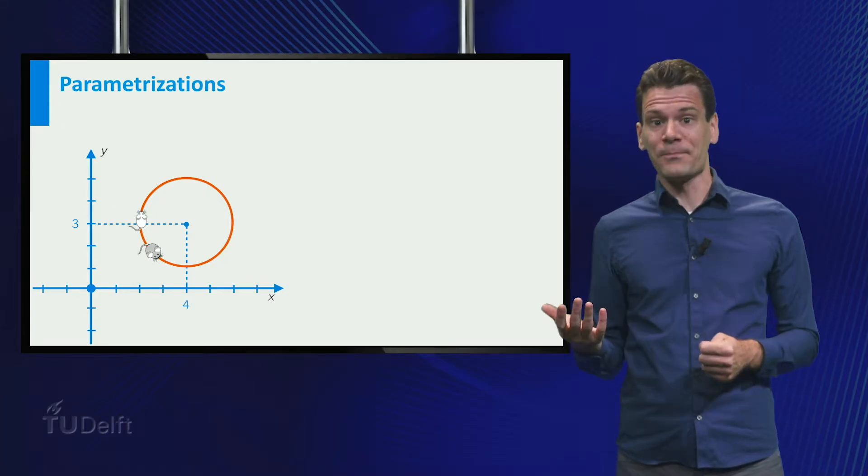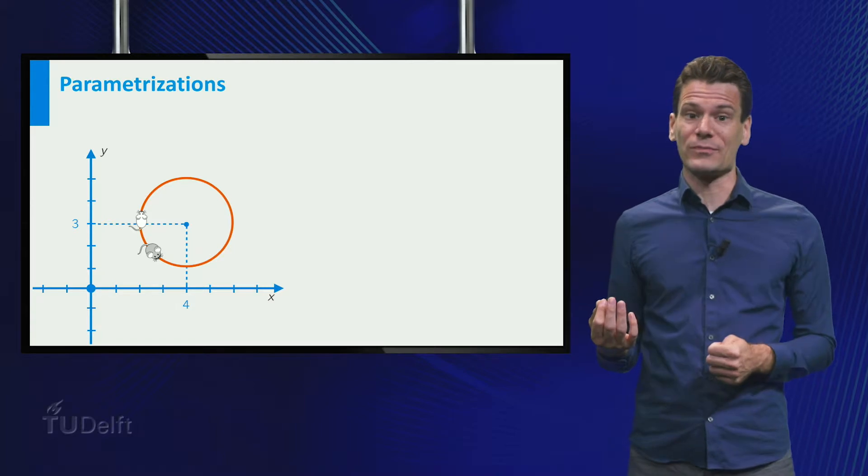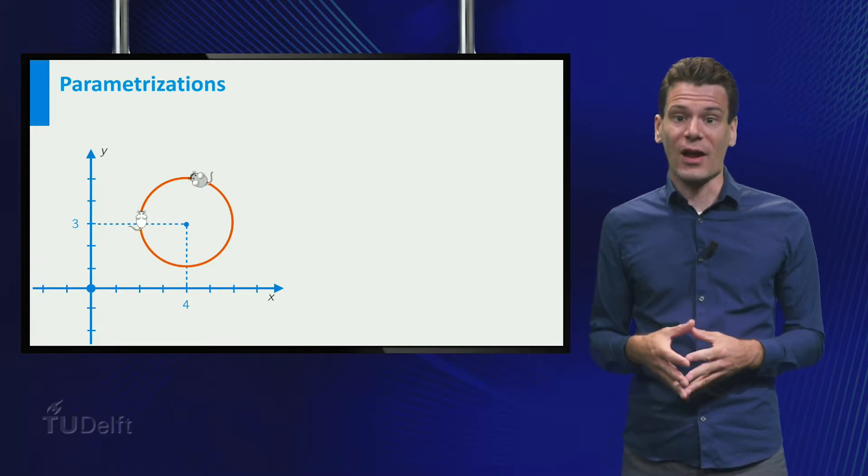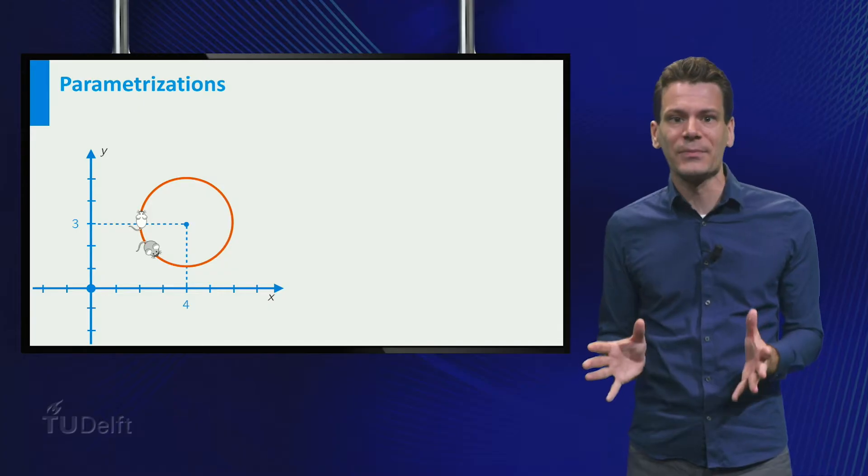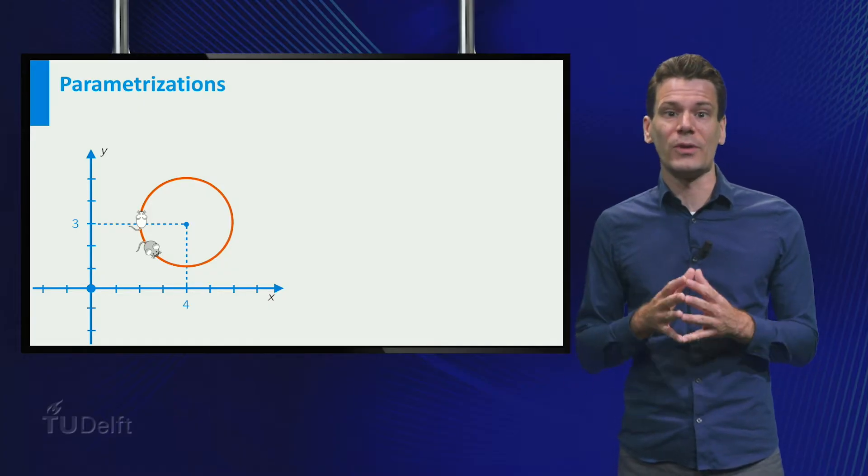This grey mouse over here might make some different choices. It stops and starts and changes pace a couple of times, but that's okay. It still describes the circle we are interested in.